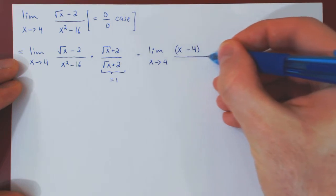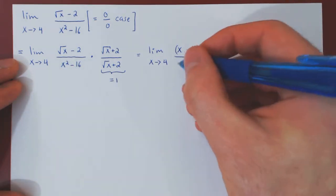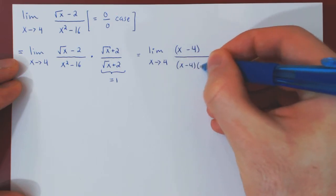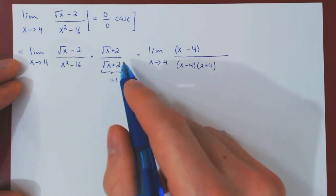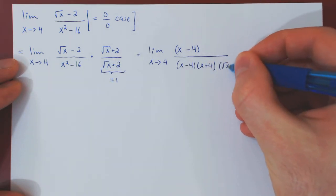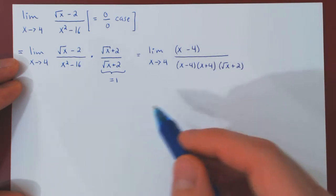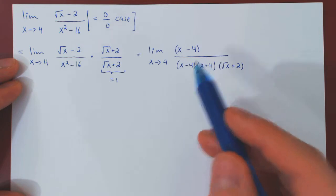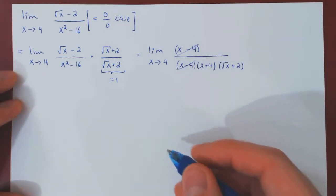On the denominator, we factor x squared minus 16 as x minus 4 times x plus 4 — basic difference of squares — and we're also left with root of x plus 2. As x approaches 4, x minus 4 is very close to 0 but not exactly 0, so we can cancel the two factors of x minus 4.